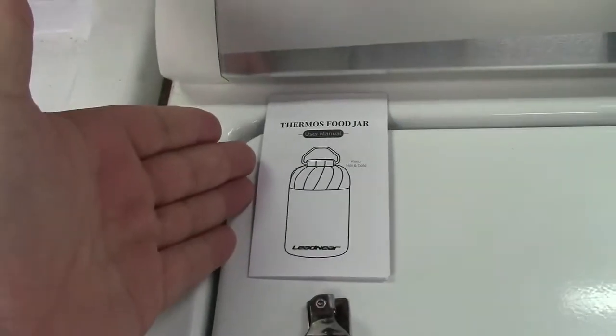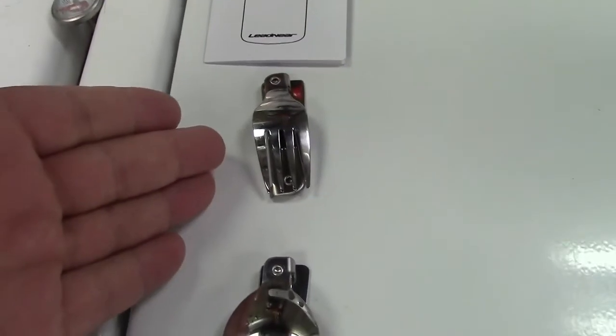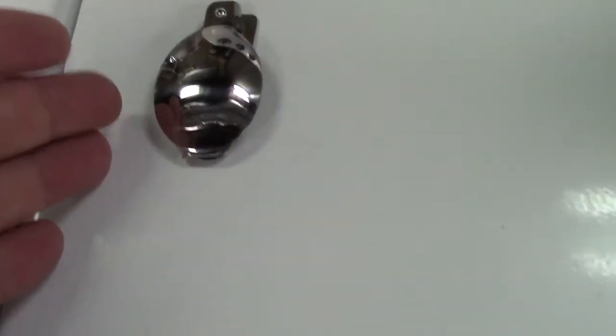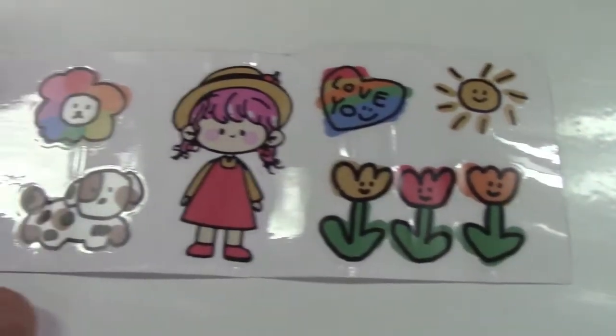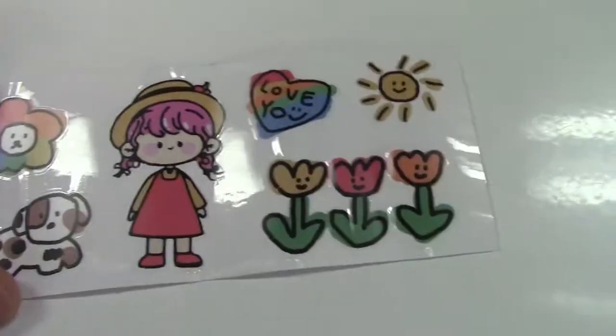In the box you get the user manual, a foldable fork, a foldable spoon, some stickers for customization. If you'd like to do that, they just obviously stick on.